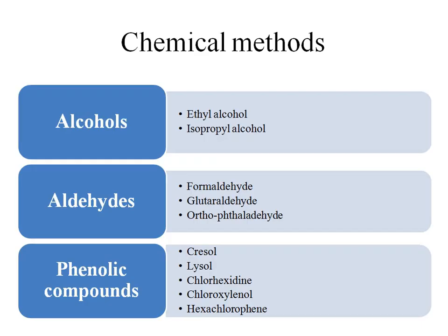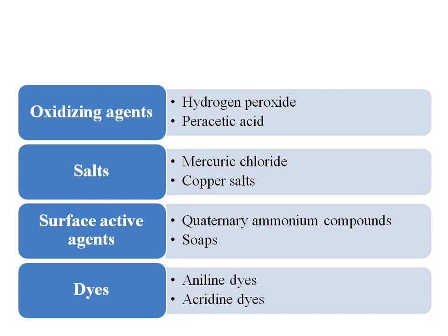Now let us see what the chemical methods are. We can use these chemicals for sterilization, disinfection, and asepsis. I am just going to name the chemicals under various sub-headings, and the details will be explained in subsequent sessions. Alcohols — example: ethyl alcohol and isopropyl alcohol. Aldehydes — like formaldehyde, glutaraldehyde, and orthophthalaldehyde. Phenolic compounds like cresol, lysol, chlorhexidine, chloroxylenol, and hexachlorophene are used as disinfectants. Oxidizing agents are hydrogen peroxide and peracetic acid. Some heavy metal salts, like mercury chloride and copper salts, are used for disinfection processes.